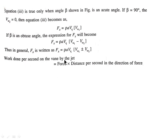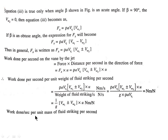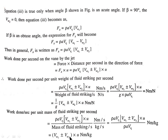Work done per second on the vane by the jet equals Fx into U, giving rho A Vr1 (Vw1 ± Vw2) U. Work done per second per unit weight of fluid striking per second equals (1/g)(Vw1 ± Vw2) U, in newton-meter per newton. Work done per second per unit mass of fluid striking per second equals (Vw1 ± Vw2) U, in newton-meter per kg.